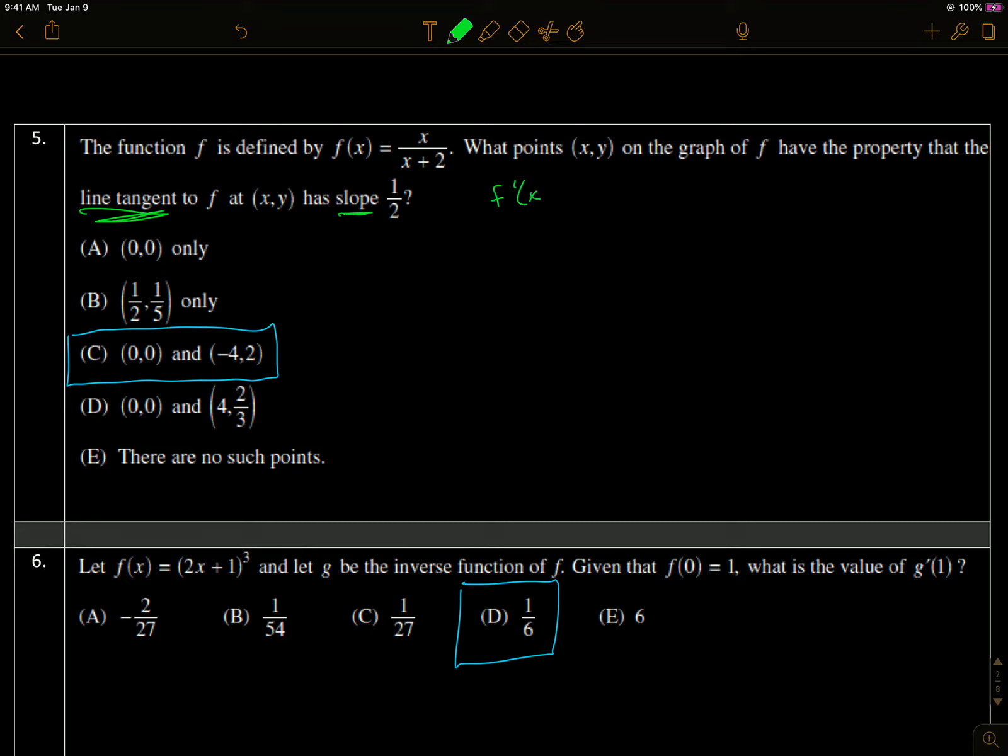So what we want to do is find the x's for which the derivative is equal to 1 half. That means the slope is 1 half, so we're going to start by finding the derivative of this function here. That's going to be quotient rule because I have one function, x, divided by another function, x plus 2.